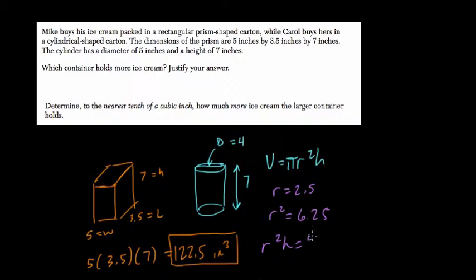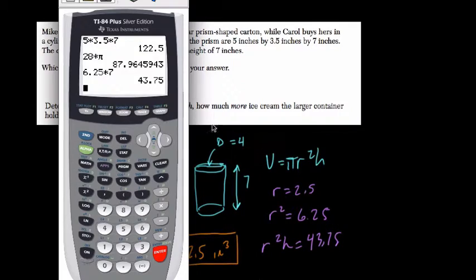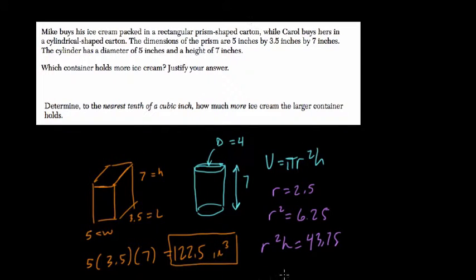But we're multiplying that by π. So times π, or second exponent button, 137.44. So the volume equals 137.44 cubic inches.